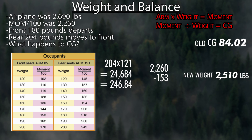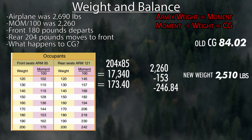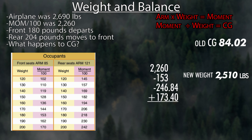Now we add the 204-pound passenger to the front. There's no table entry for 204 at the front either, but the front seat arm is 85. So: 204 times 85 equals 17,340, or 173.4 divided by 100. We add that to our moment. The result is a new moment of 2,033.56.